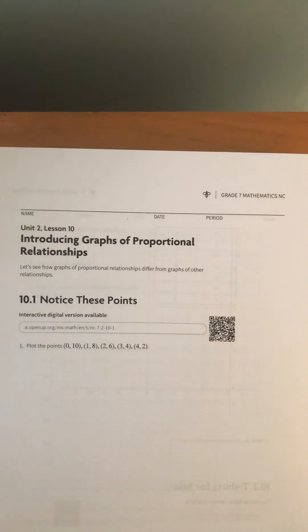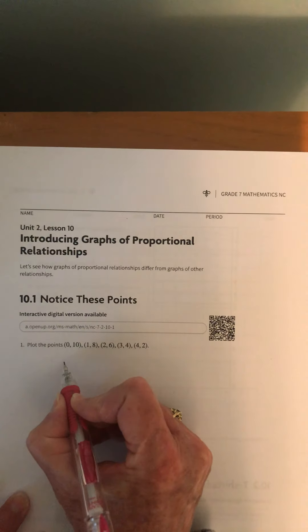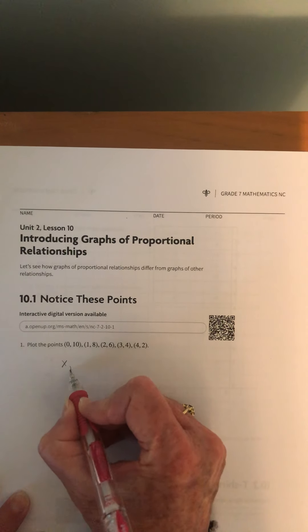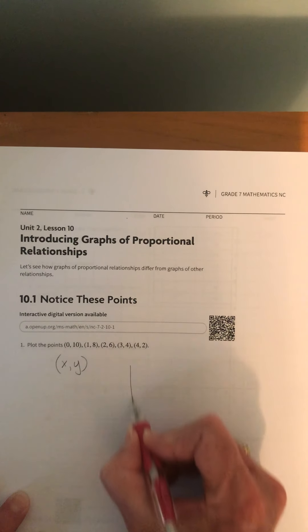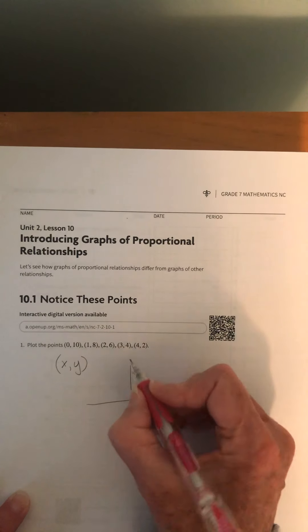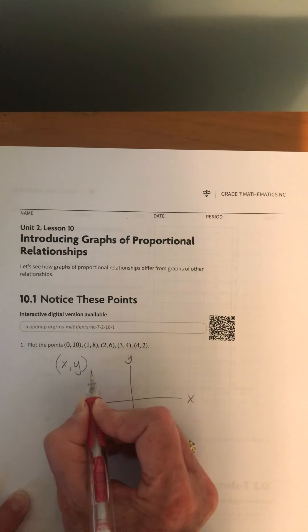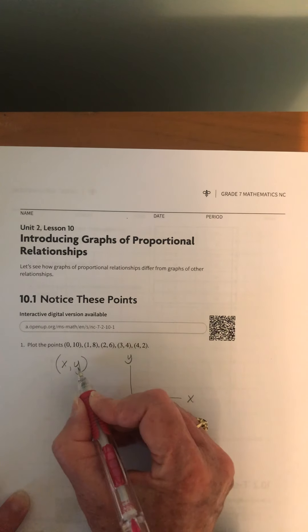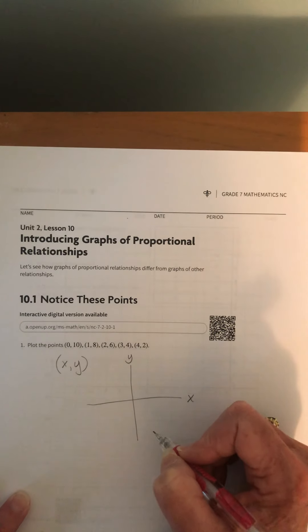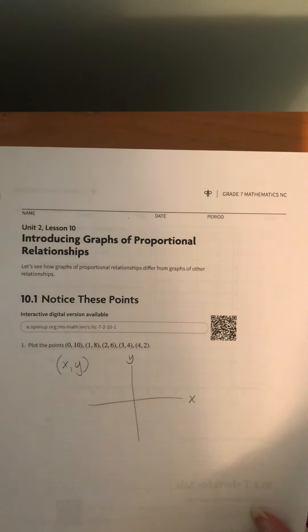Let's review how to plot some points. Points are always in the form of x comma y. On the coordinate plane, the x-axis goes left and right and the y-axis goes up and down. We always do the x number first — go left or right — then go up or down for y.